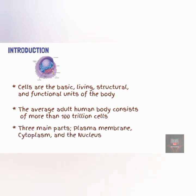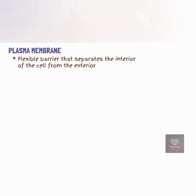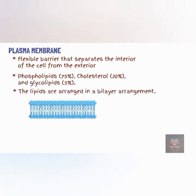The cell is made up of three main parts: the plasma membrane, the cytoplasm, and the nucleus. The plasma membrane is a flexible barrier that separates the cell from the external environment. It is made up of phospholipids, cholesterol, and glycolipids. The lipids in the plasma membrane are arranged in a bilayer arrangement, with two halves: the external and the internal lipid layer.